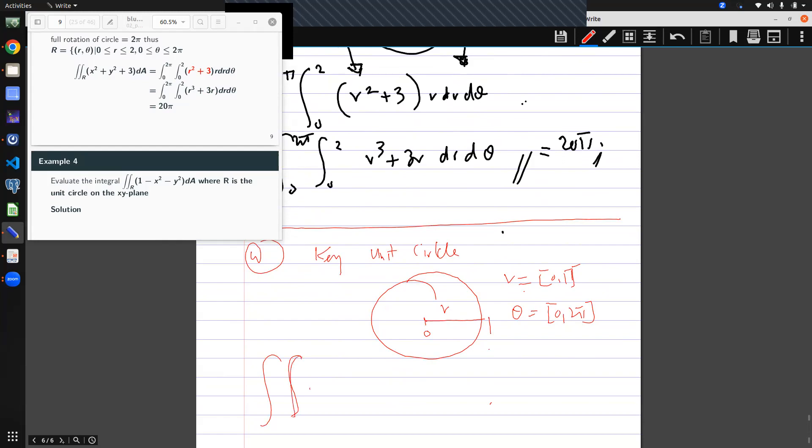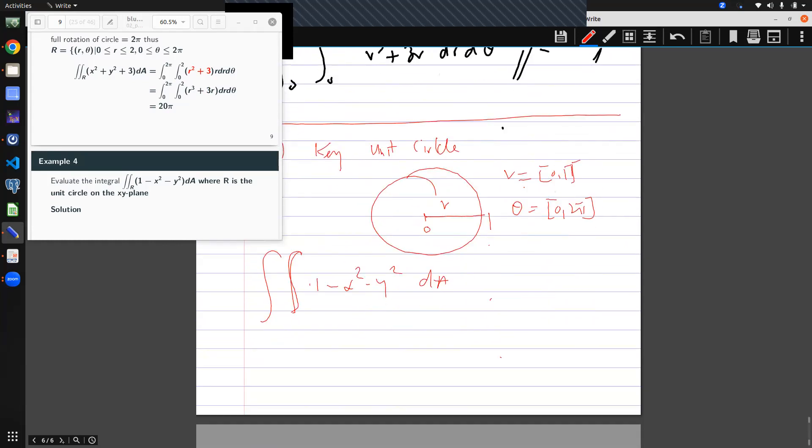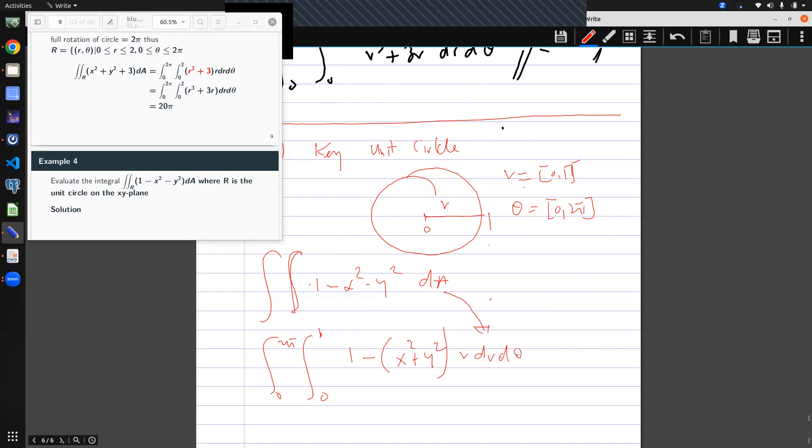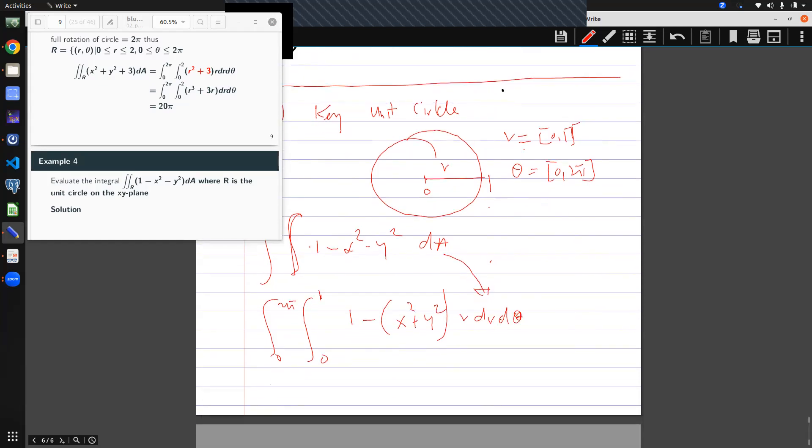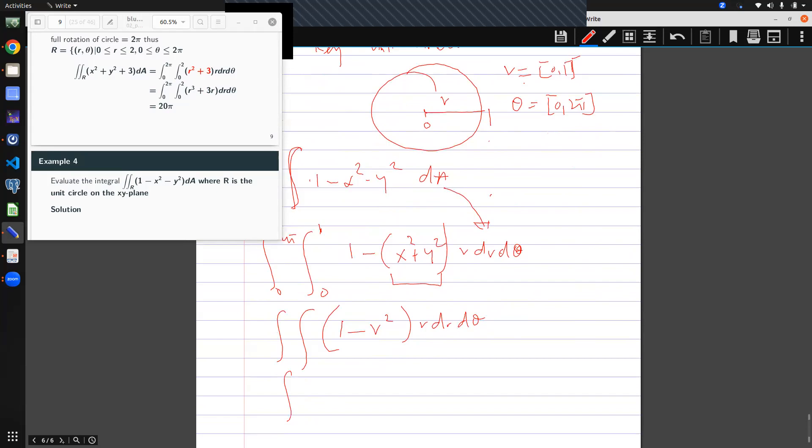So my double integral here becomes, let me write a problem here. dA. It becomes zero to two pi and zero to one, a unit circle. One minus, I can factorize out my negative out. I know my dA would always be r dr d theta. If I simplify further, I get one minus, what does this give me? R square. r dr d theta. Again, zero to one. I expand. I get r minus r cube dr d theta. And so we've converted the problem into a polar coordinate.